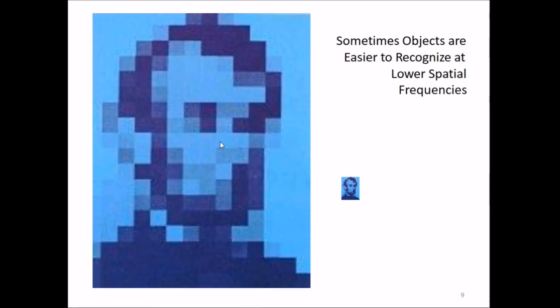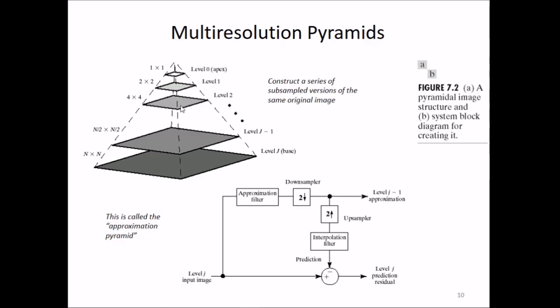Now coming to multi-resolution pyramids, we construct a series of subsampled versions of the same original image. We start with n by n and subsample it—reducing it to n/2 by n/2, then continuing until we go to a single pixel. This is called the approximation pyramid. We have an image, do approximation filtering, then down sampling. This filtering is important, and then we do down sampling.